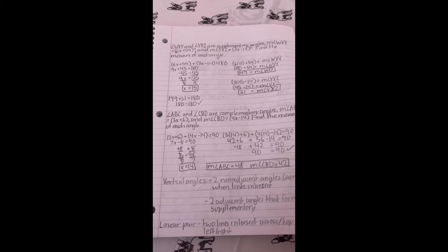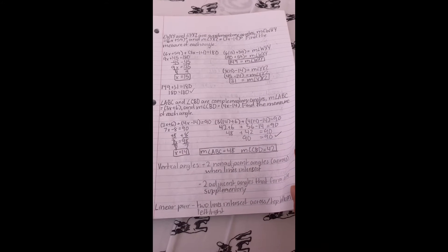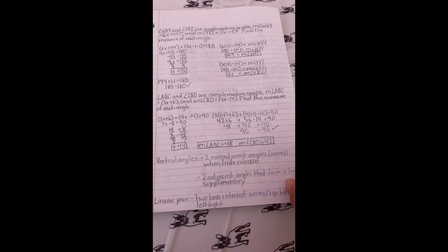Angle ABC and angle CBD are complementary angles. M angle ABC is equal to 3x plus 6 and M angle CBD is equal to 4x minus 14. Find the measure of each angle.